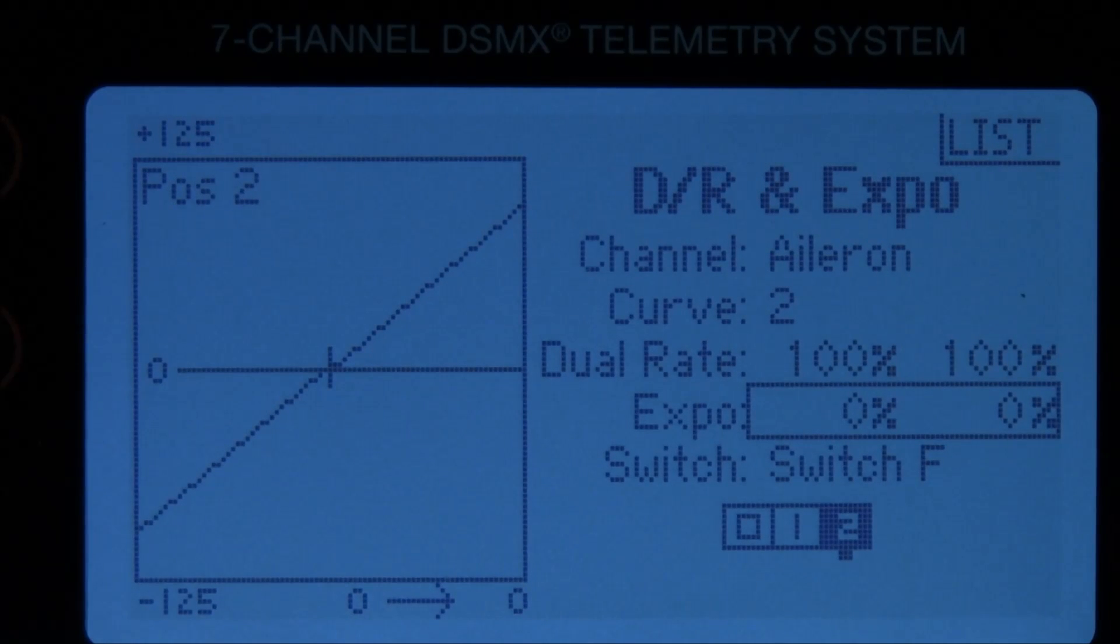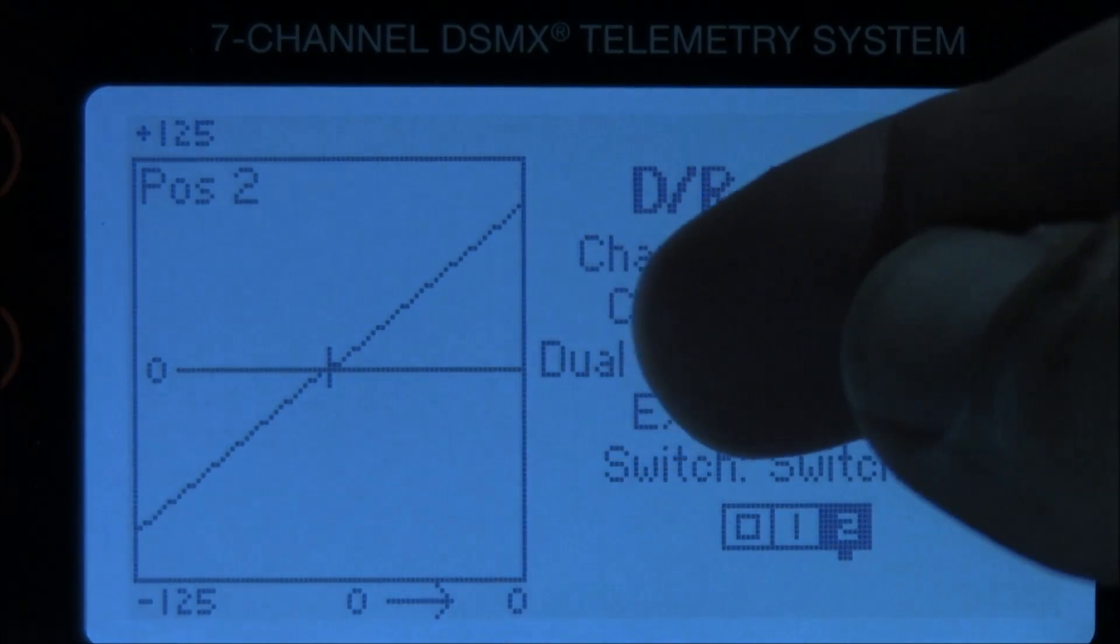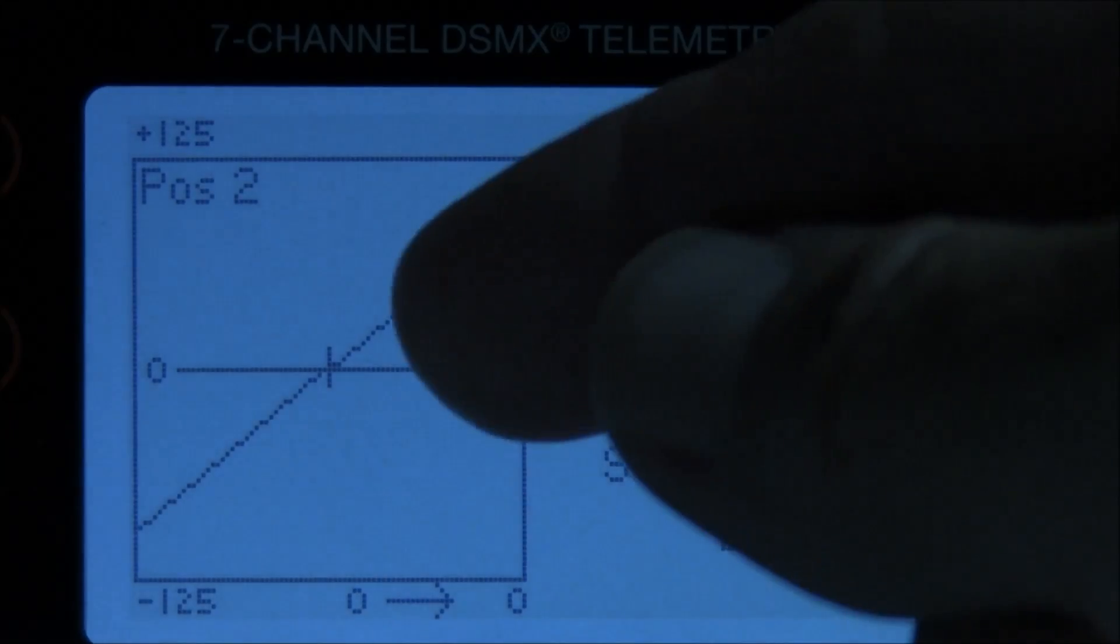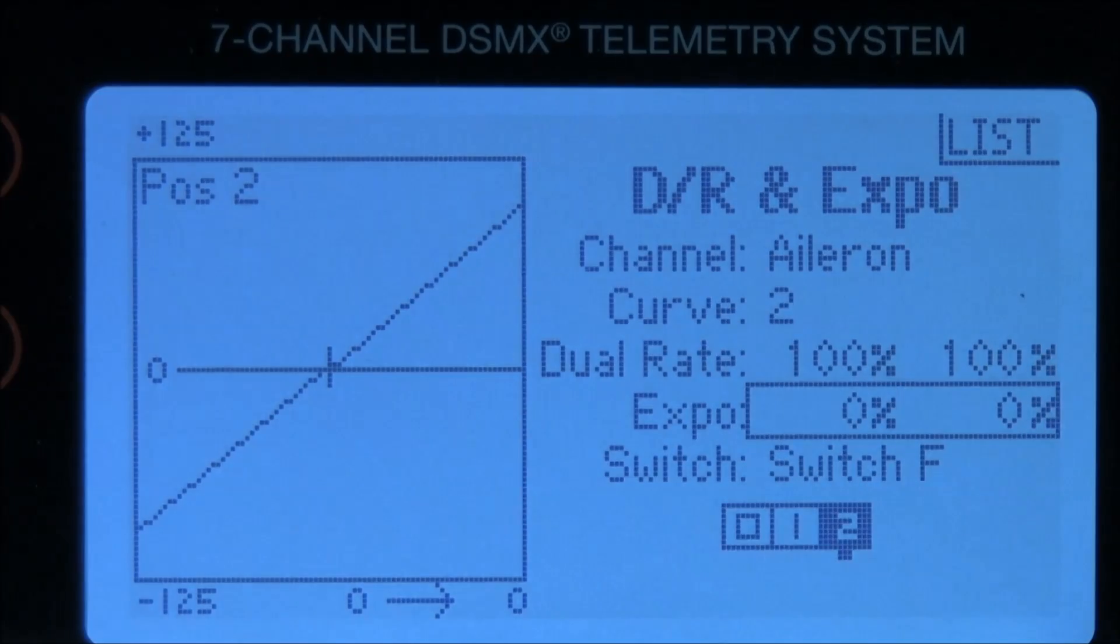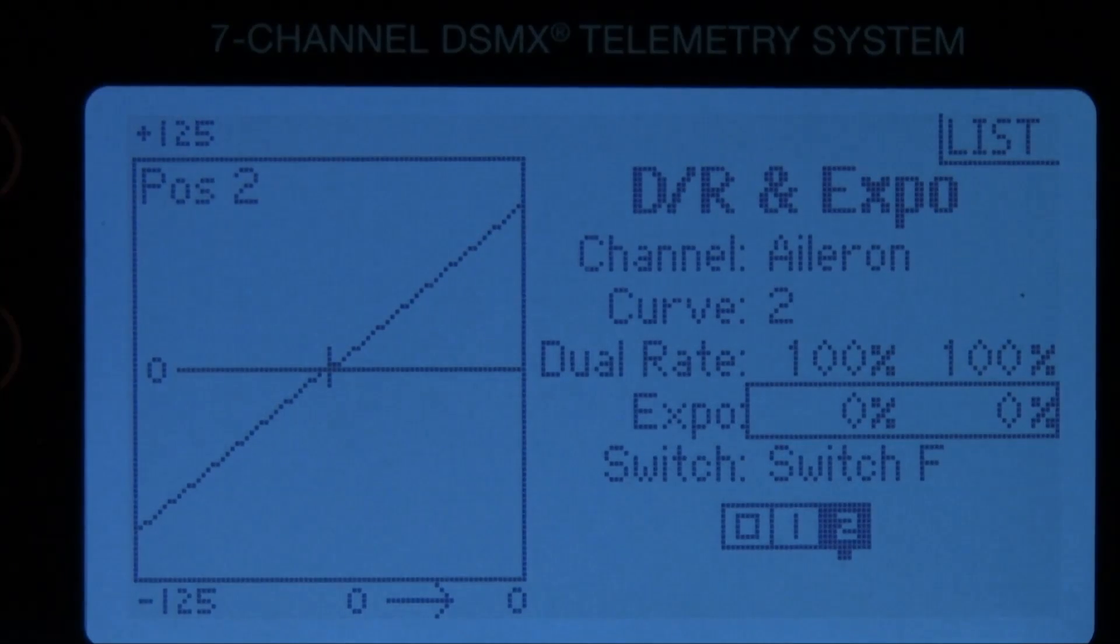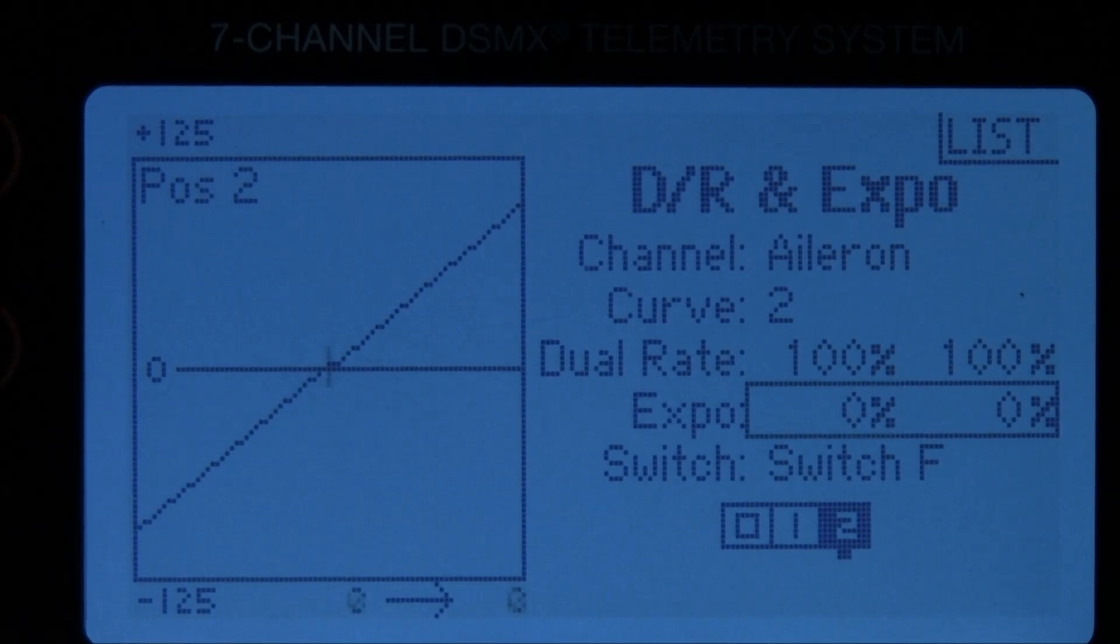To make things soft around center you're going to add a value such as one, two, three, four. And you'll see on this curve screen how the values change the way the servo moves. Right now you're looking at a very linear relation. So in this case because we have a lot of movement in our high rates trying to be precise around center is going to be difficult.